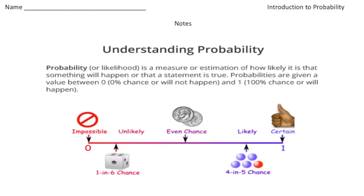So what exactly is probability? Right here if you put a star right next to the definition, probability or likelihood is a measure or estimation of how likely it is that something will happen, or that a statement is true. Probabilities are given a value between 0%, which means it's not going to happen, and 1, which is 100%, which is certain.